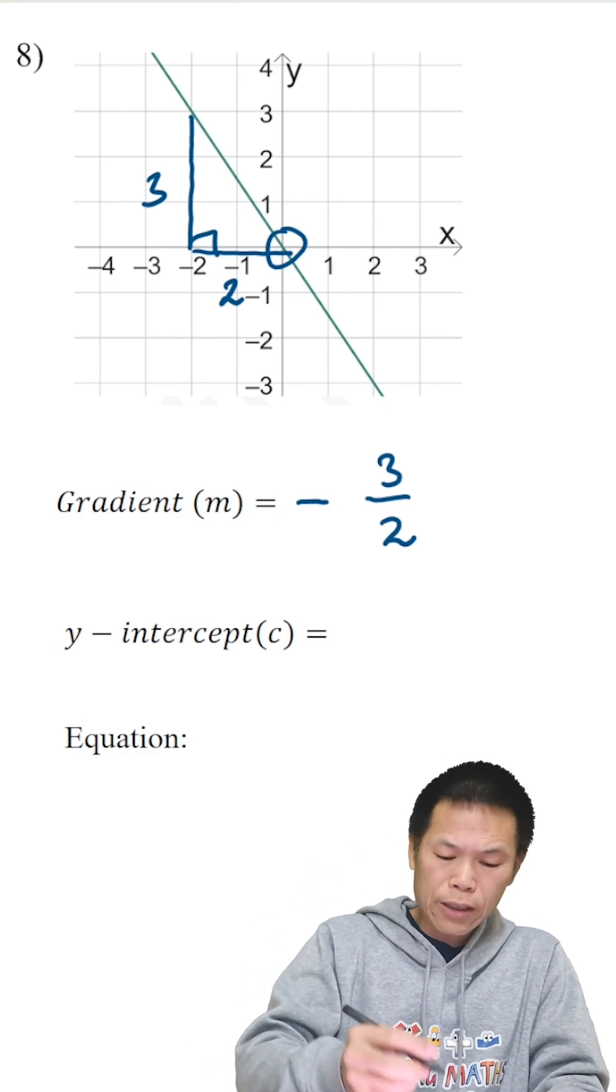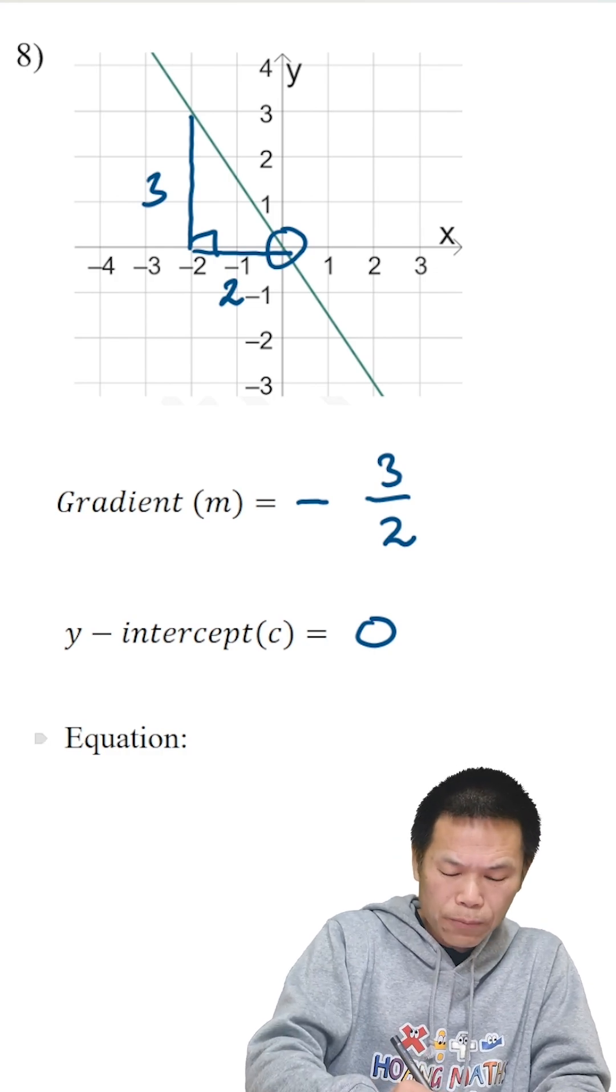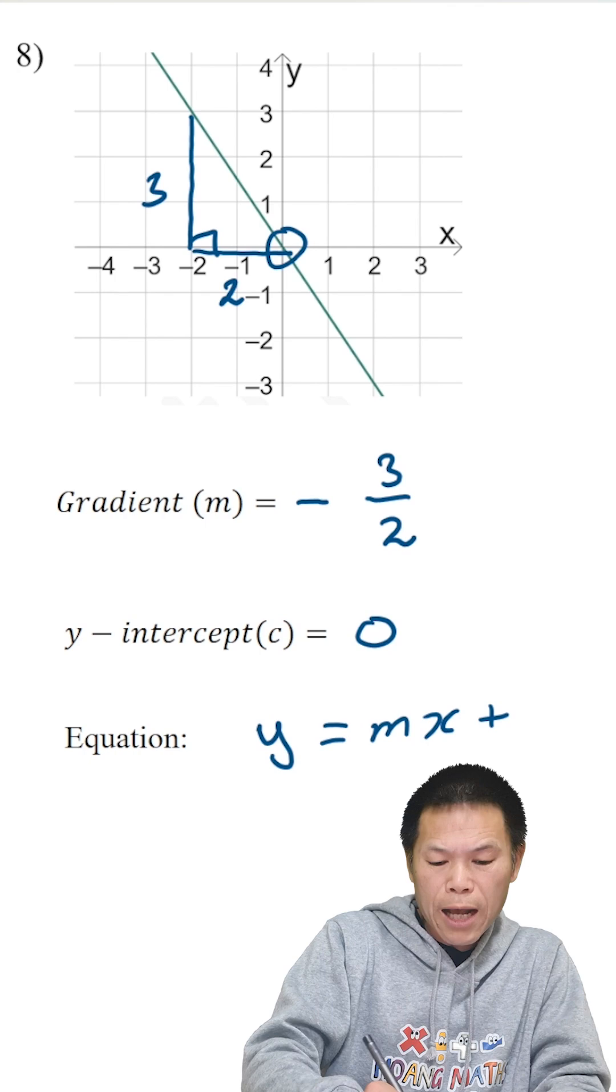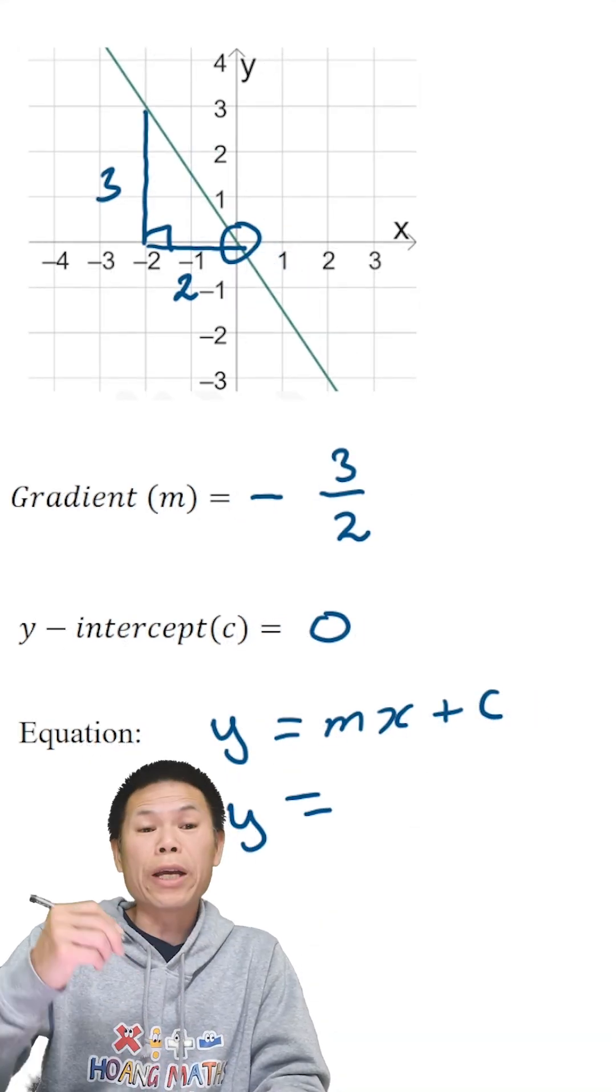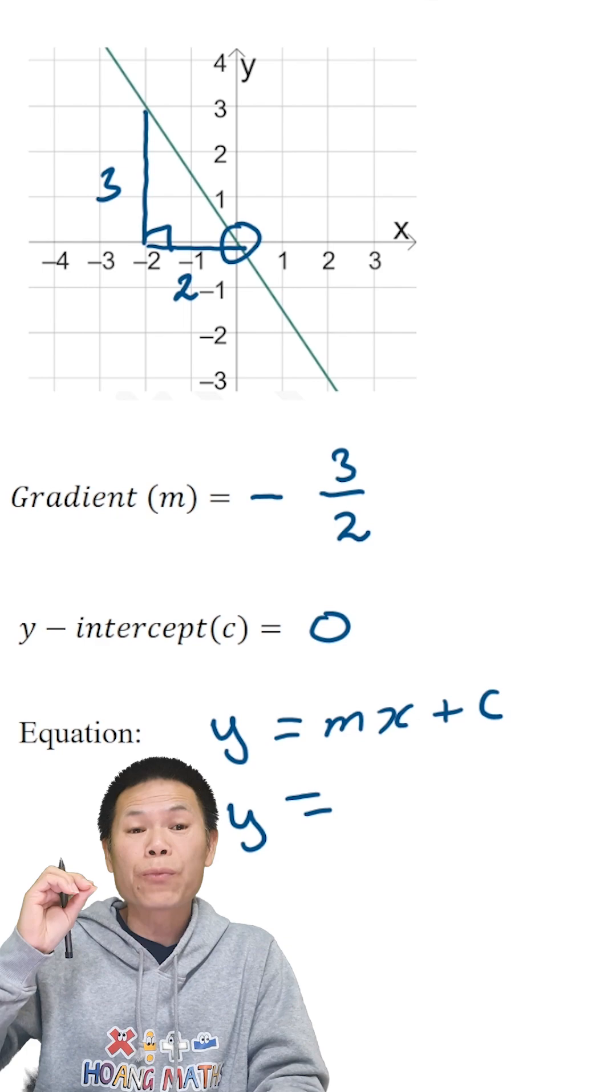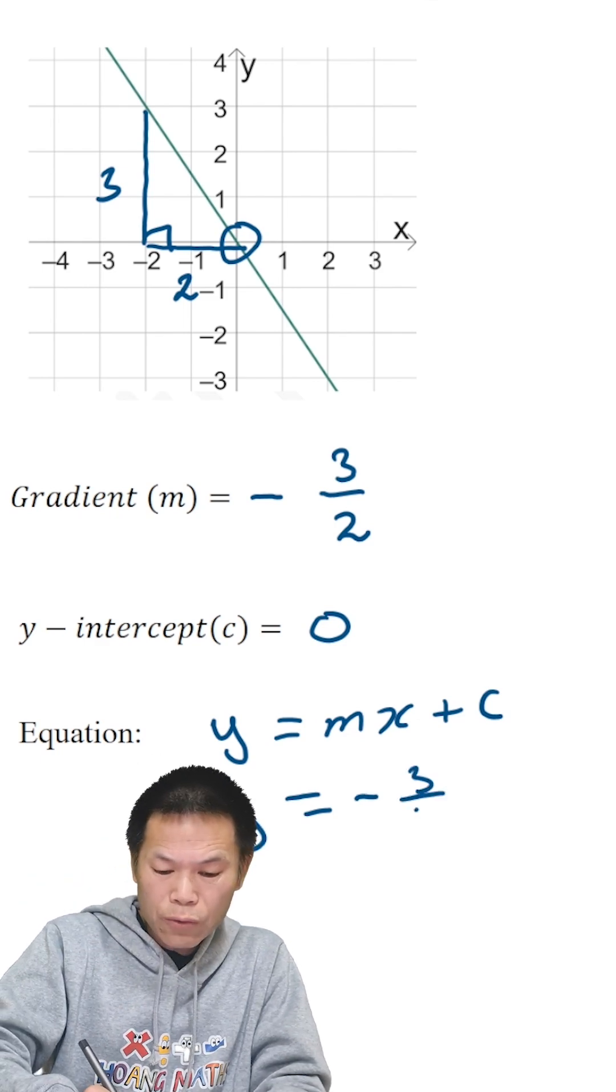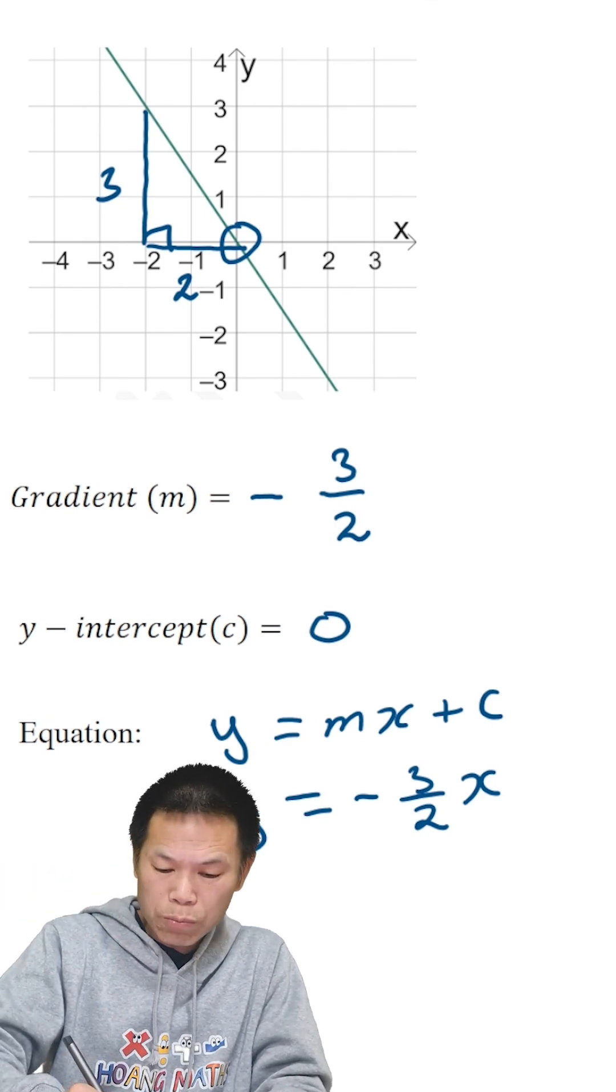So the rule is y equals mx plus c. And m is the gradient, so the gradient is negative three over two. Negative three over two times x, and we add c. C is zero, so plus zero.